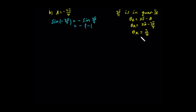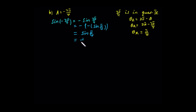Since theta-r is in the fourth quadrant, sine is negative times sin(π/4). Negative times negative becomes positive sin(π/4). Sin(π/4) equals 1/√2, which we rationalize by multiplying by √2/√2, giving root 2 over 2.